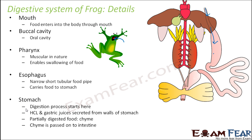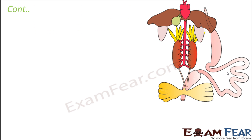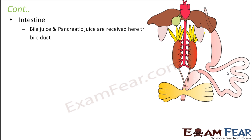Digestion starts in the stomach. Gastric juices and hydrochloric acid are secreted from the stomach walls, causing partial digestion of food. This partially digested food is known as chyme. The chyme then passes into the intestine, which is the main site of digestion and absorption, where bile juice and pancreatic juice are received through the bile duct.